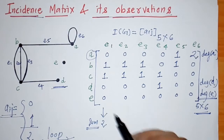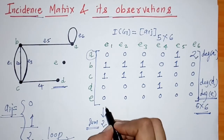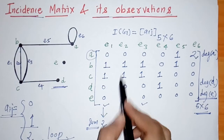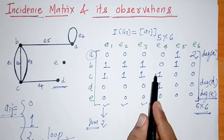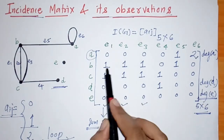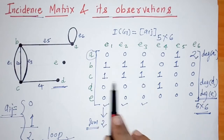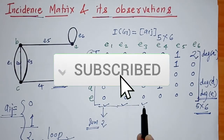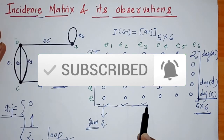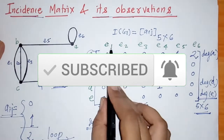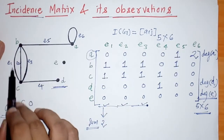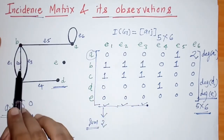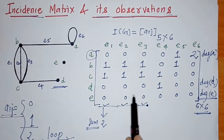Next, we can check that the entries in the 1st, 2nd, and 3rd columns are equal — these are identical columns. This means that the corresponding edges E1, E2, and E3 are parallel edges.